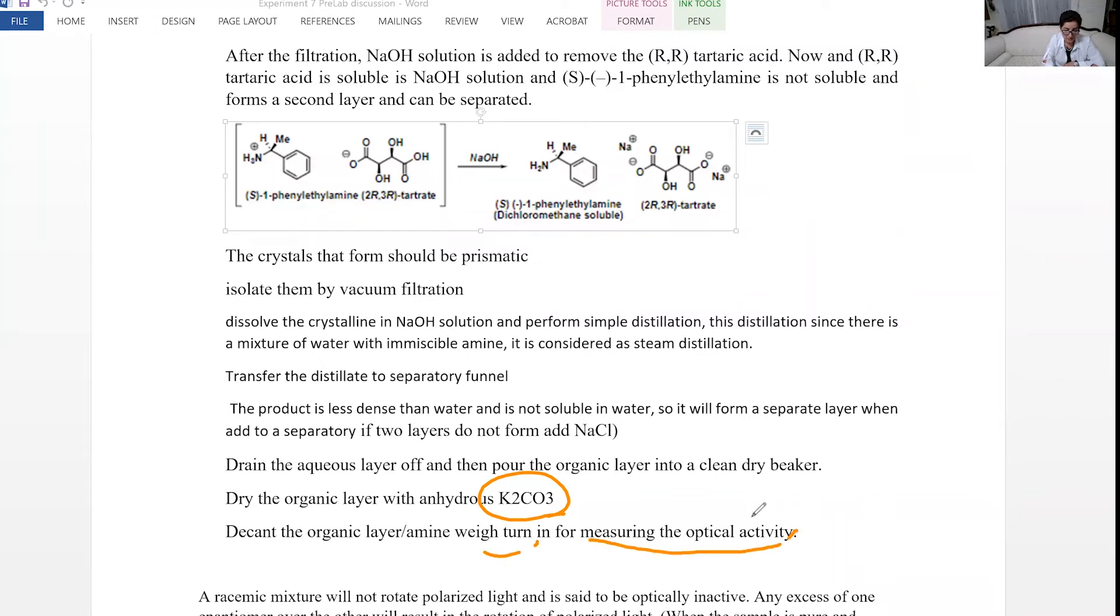Then you just get the organic layer without any of this solid to measure the mass and also measure the optical activity. To measure the optical activity, there is a machine that we are using. It's called polarimeter. Polarimeter has plane polarized light or generates plane polarized light.